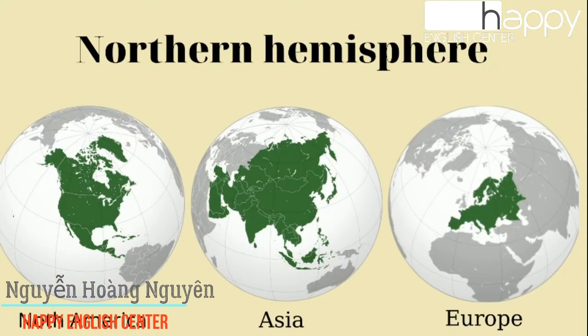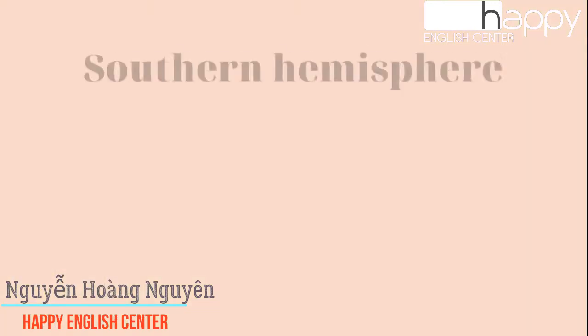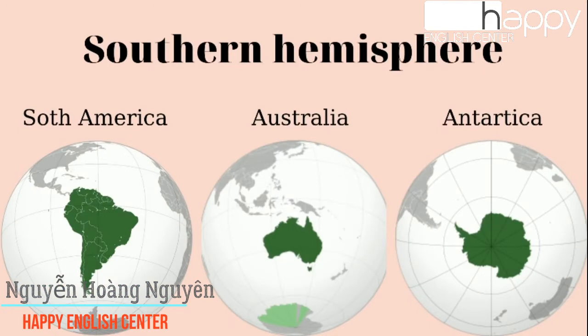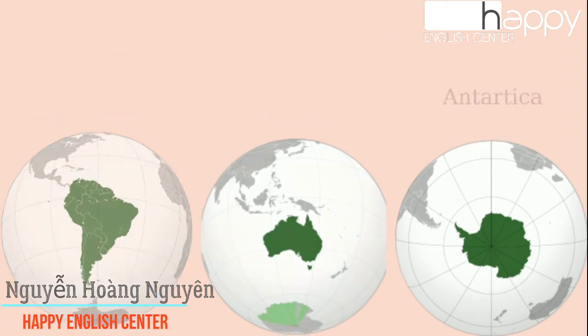The top part is the Northern Hemisphere. In the Northern Hemisphere, you can find the continents North America, Asia, and Europe. The bottom part is the Southern Hemisphere. In the Southern Hemisphere, you can find the continents South America, Australia, and Antarctica.